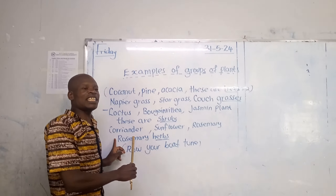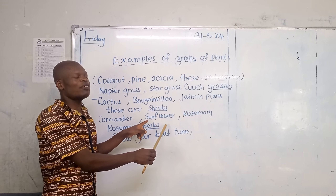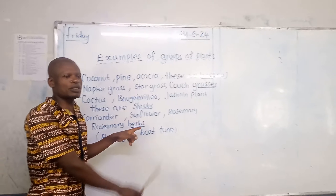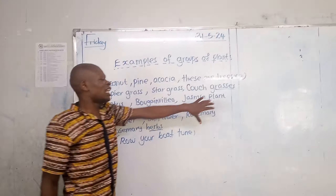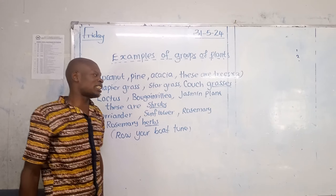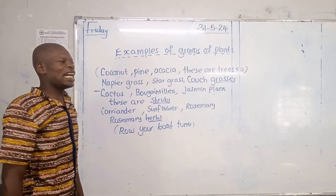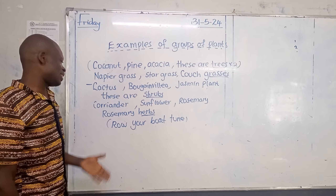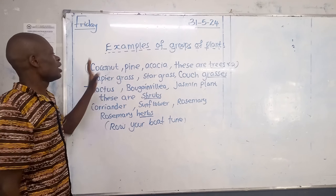You have coriander, used as food. Sunflower, used to manufacture cooking oil. And you have rosemary, used as food — you can use it in tea and other things at home as well.